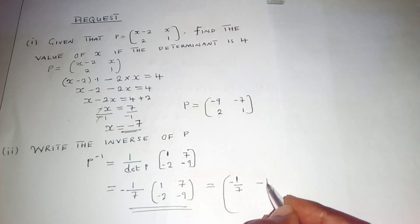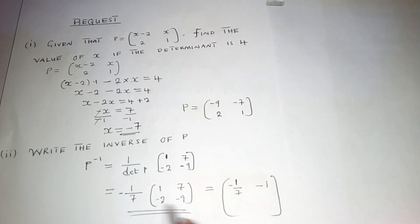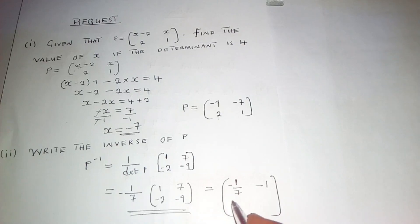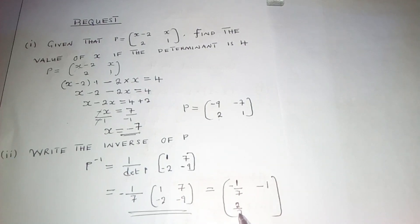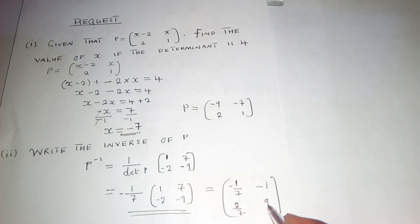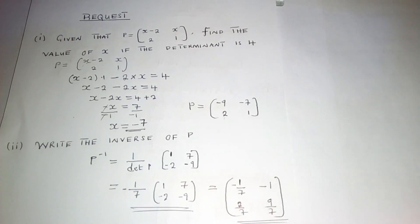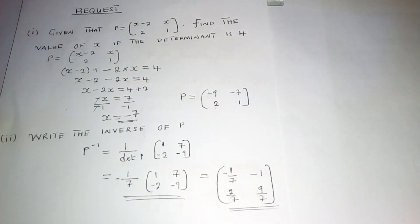Here we have negative 1, because 7 can go into 7. Here we have 2 over 7. The negative and negative will cancel. Here we have 9 over 7. So this can also be the answer. Thank you very much. Remember to subscribe to my YouTube channel so that you will remain updated whenever I post something new.